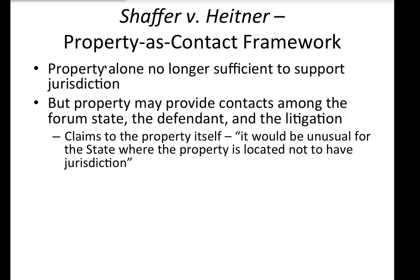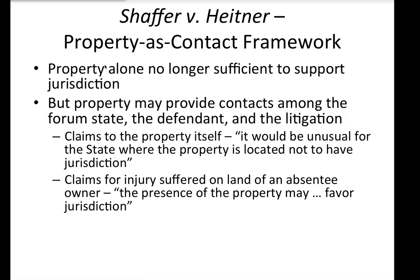First, the court says, when the claims in the lawsuit concern the property itself — such as ownership of the property — it would be unusual for the state where the property is located not to have jurisdiction. For example, if Joe and Bob both claim ownership of a piece of property in Oregon, the quiet title action to determine ownership would give both litigants sufficient contacts by virtue of their claim to the property itself.